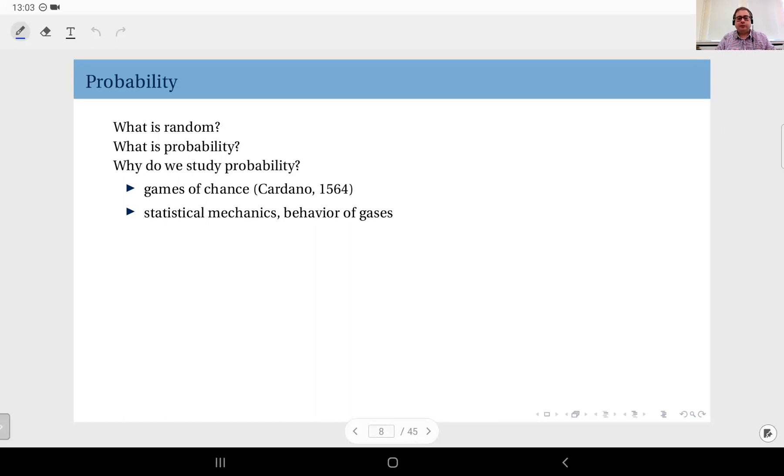And another application area is in biological models, especially with population genetics, and with what probability should we see this genetic behavior in animals or other species, or how likely is it to see this disease in this population, etc.